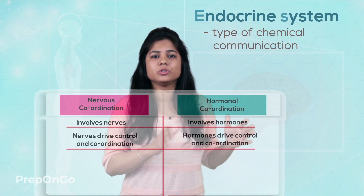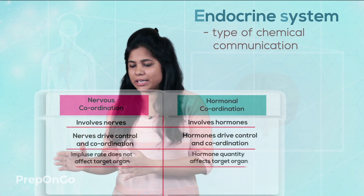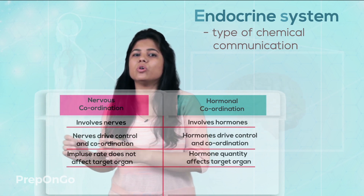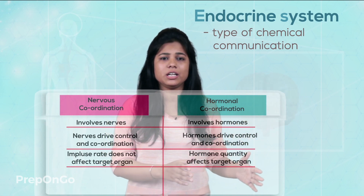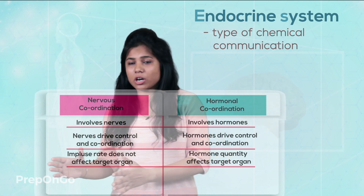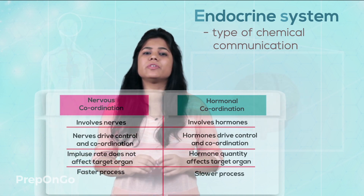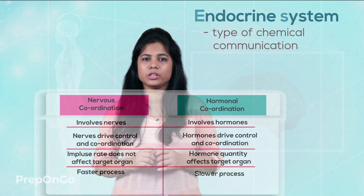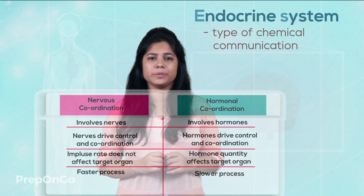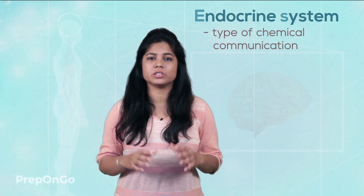But in the hormonal system, hormones are specialized for each and every function. You can see that organs are not affected if the rate of electrical impulse is more or less, but if there is an increase or decrease in the hormones, then the target organ will get affected. In nervous coordination the procedure is faster — it is a faster process preferred for sending information to a particular part of the body. Whereas hormonal coordination is a slower process but can send information to each and every part of the body.